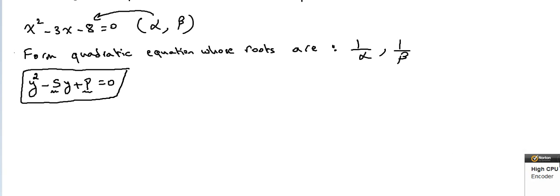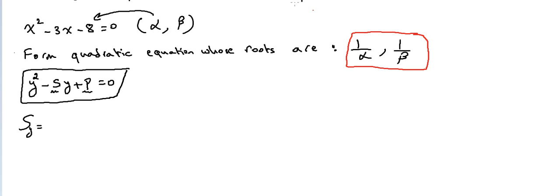Let's call the sum of the new equation Sum_y. The sum here is the sum of the roots of the new equation, and the roots are 1/alpha and 1/beta. So Sum_y = 1/alpha + 1/beta. To add these fractions we take the common denominator, which is alpha·beta.